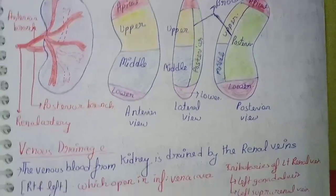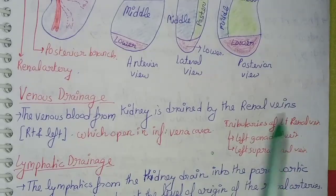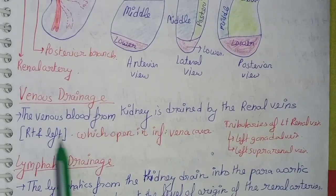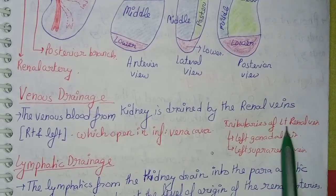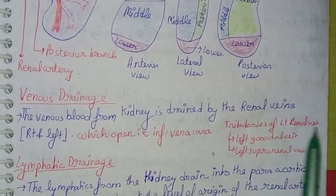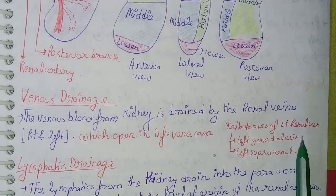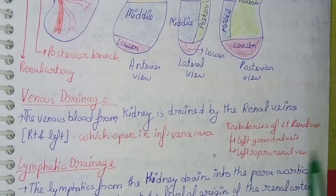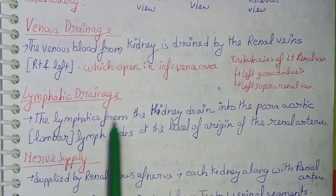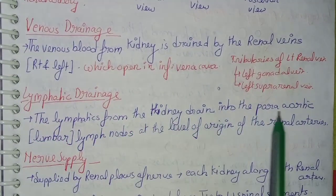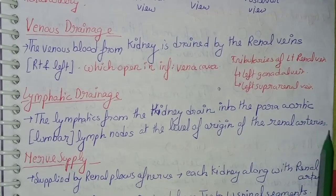Coming to venous drainage of the kidney: the venous drainage is via the renal veins (right and left), which open into the inferior vena cava. The most commonly asked question is about the tributaries of the left renal vein — the answer is the left gonadal vein and the left suprarenal vein. The lymphatics from the kidney drain into the para-aortic lumbar lymph nodes at the level of origin of the renal arteries.